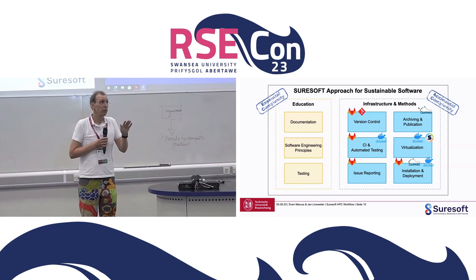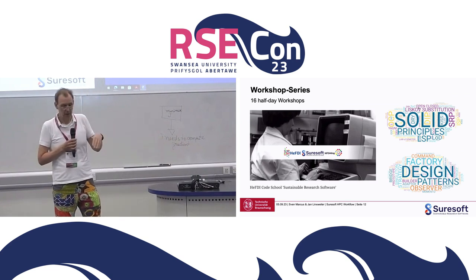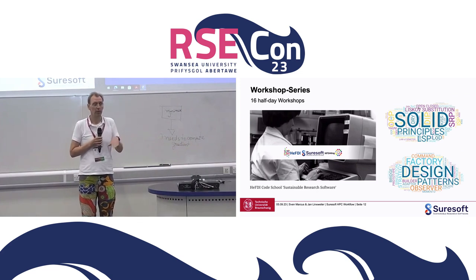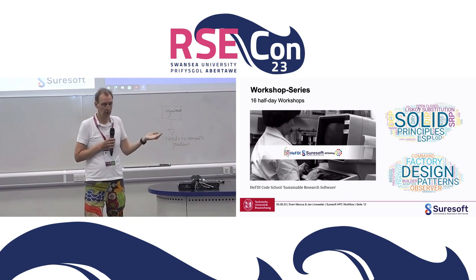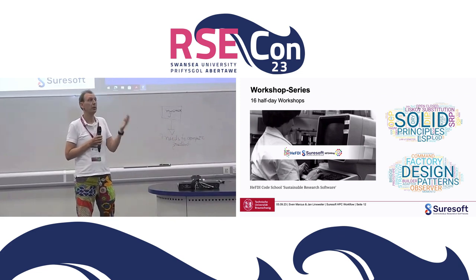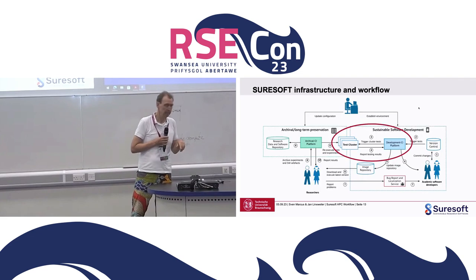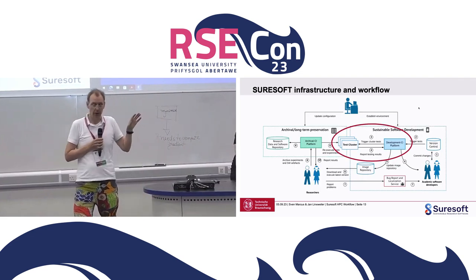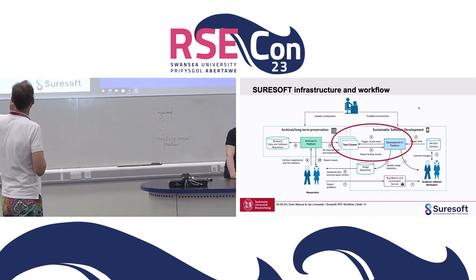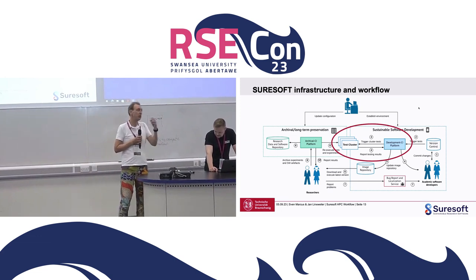I'm not going into the details of the first part, but just one slide. We have a workshop series built upon the Carpentries, the basic skills and Code Refinery material. But there are additional things you can learn from software engineering, like design patterns and SOLID principles. That's how we try to educate people to deal with the essential part. But today we want to focus on accidental complexity. This is an overview of the infrastructure we built, and we will focus on the integration of the continuous integration system with our HPC system.